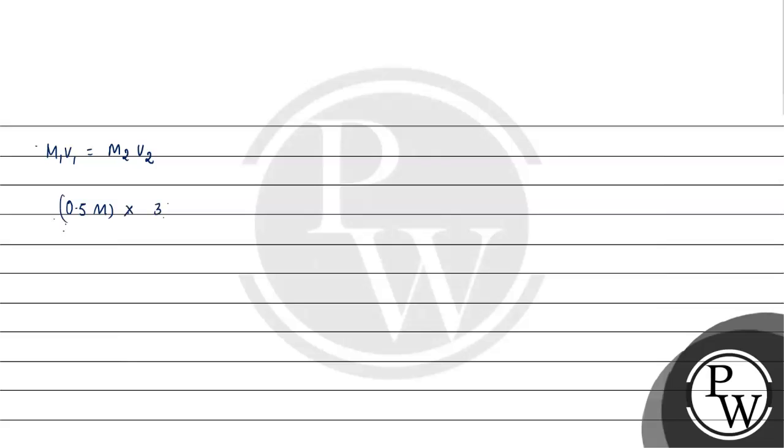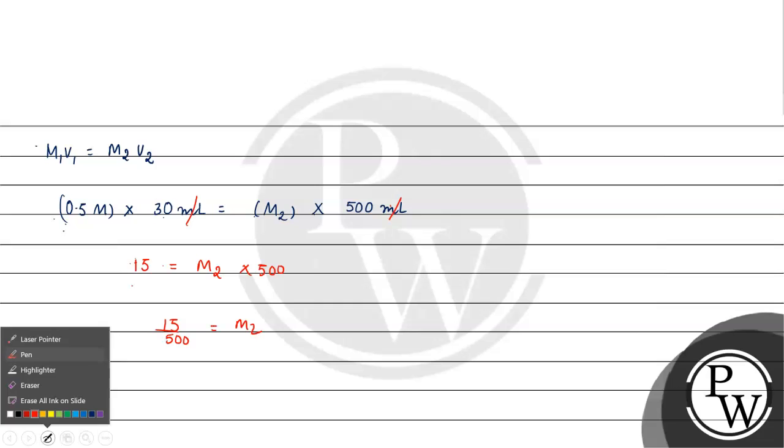So 0.5 molar times 30 ml equals M2 times 500 ml. The ml will cancel out. 30 times 0.5 is 15, so 15 equals M2 times 500. 15 divided by 500 comes to...